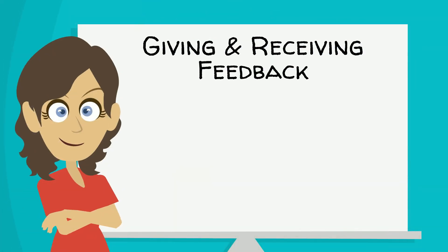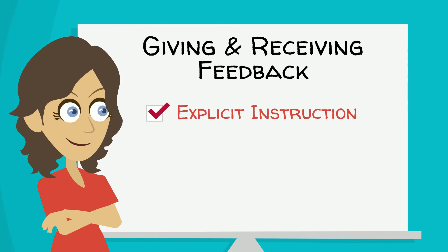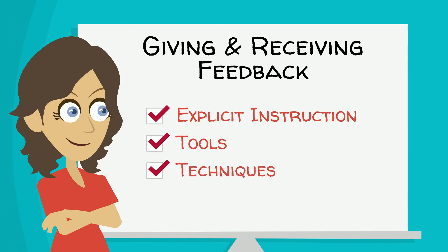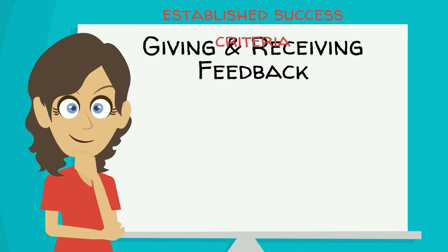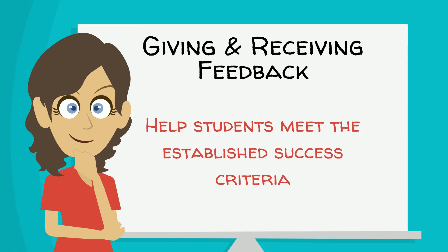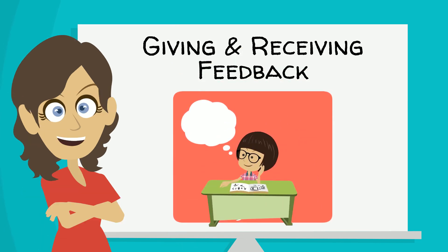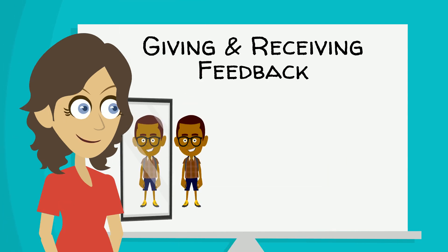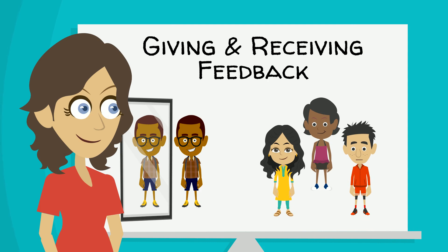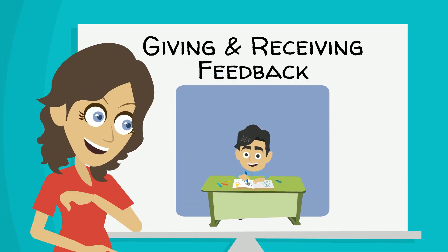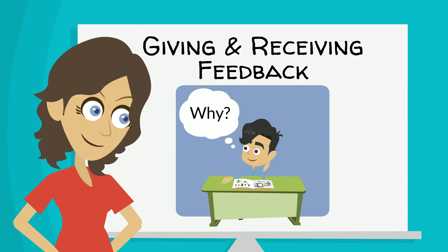Giving and receiving feedback from a variety of sources takes practice. As the teacher, you may need to provide explicit instruction, tools, and techniques on peer and self-assessment. Don't forget that the goal of feedback from self and peer assessment is to help students meet the established success criteria. You'll probably need to remind students about this and also remind them about keeping the mindset and environment focused on growth for all. You'll also need to provide many opportunities for students to practice evaluating their own thinking and the thinking of others. Along with this evaluation, students must be encouraged to think about why they and others think the way they do.